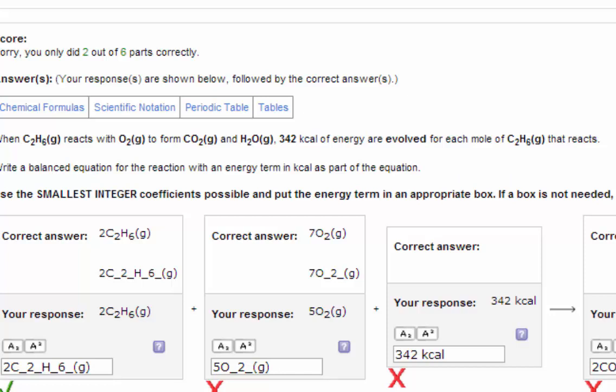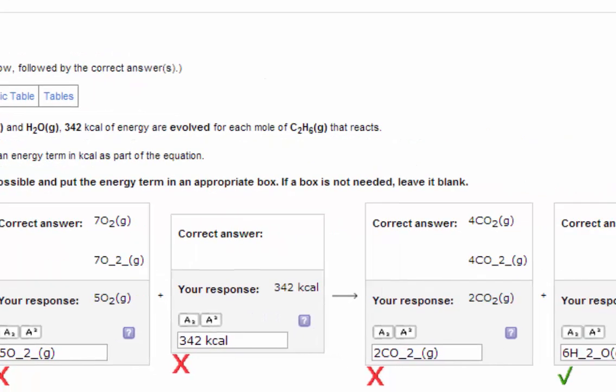Now we have to determine the proportion of heat to a particular reactant or product. Here they tell us 342 kilocalories are evolved for each mole of C2H6. In the balanced chemical equation, there are two moles of C2H6. That means you need to double the amount of heat given off and so the correct answer is 684.